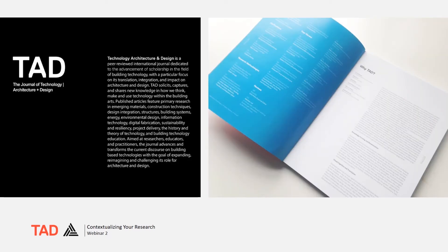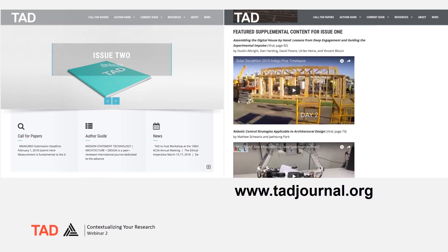TAD is an international peer-reviewed journal of the Association of Collegiate Schools of Architecture, ACSA. The journal is dedicated to the advancement of research in the field of building technology with a focus on the impact, translation and integration of technology in architecture and design. The journal features solicited and peer-reviewed papers discussing primary research on a broad range of topics including emerging materials, construction techniques, structures, building systems, energy, environmental design, information technology, history and theory of technology, and building technology education. TAD is published by Taylor & Francis. If you are an ACSA member, you are likely already receiving a copy of TAD in your mailbox. You can also access TAD through the Taylor & Francis website where select content is available. If you would like to learn more about the journal, you can visit our website for editorial guidelines and supplemental content for each issue.